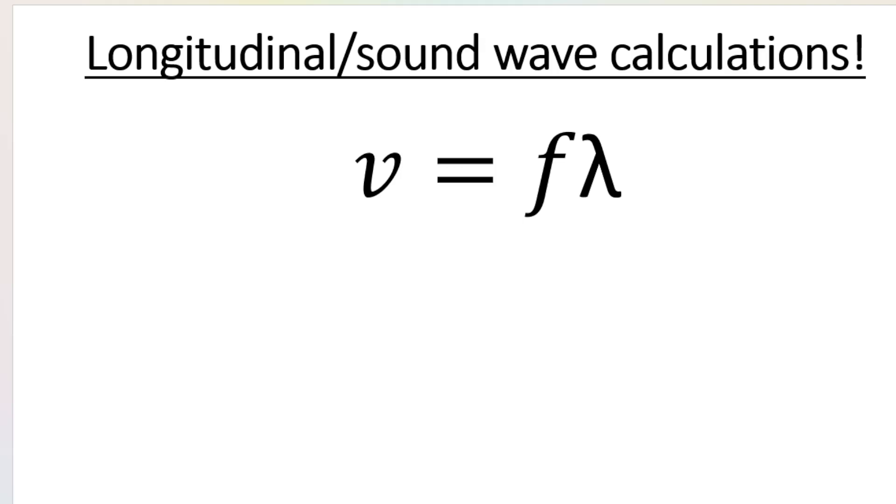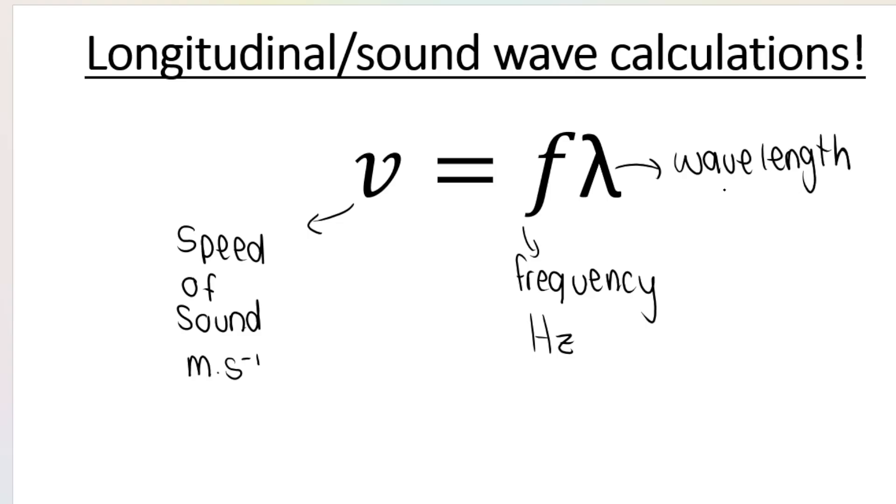First things first, you need to know this formula is given on your formula sheet and you need to understand what each of these variables mean and the units associated with those variables. v is the speed of sound, measured in meters per second. Then we've got frequency of our wave, and frequency is measured in hertz. And then we've got wavelength, the distance between two consecutive points in phase on a wave, measured in meters.